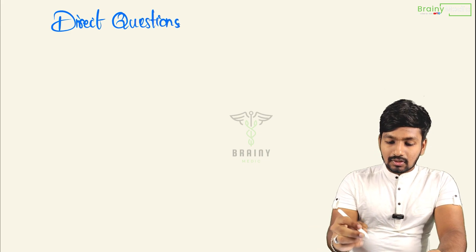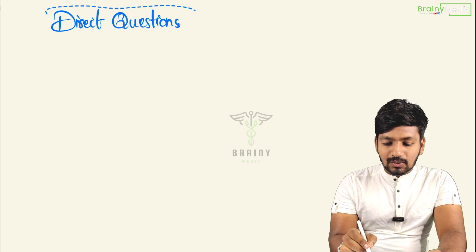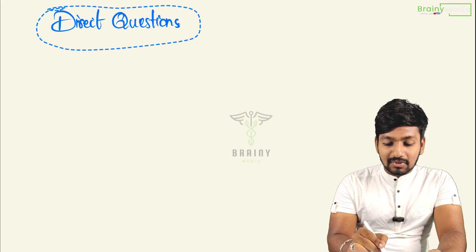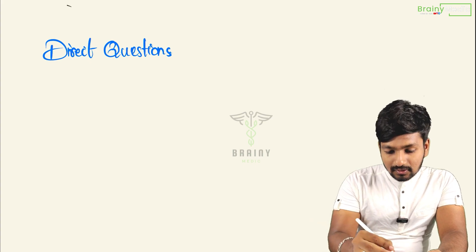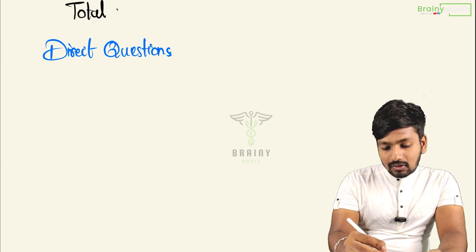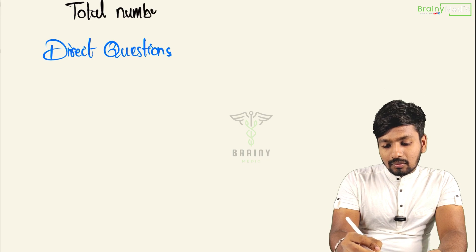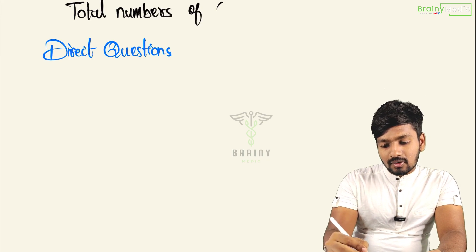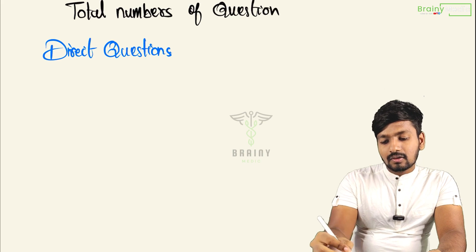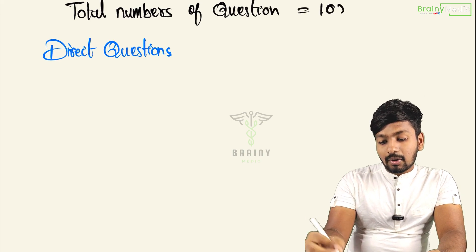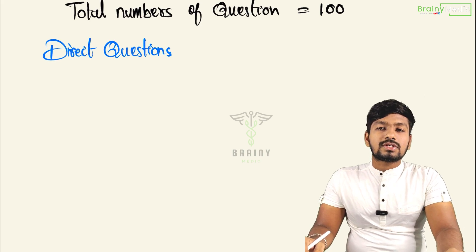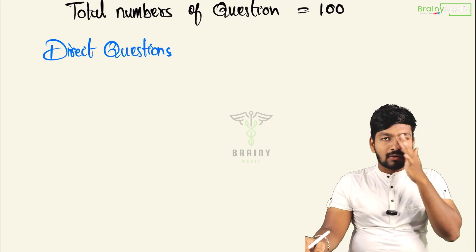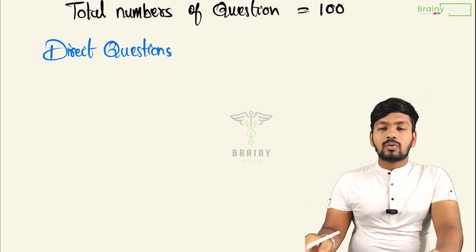First, total number of questions — I'm telling you. In biology, there are 100 questions: Botany 50, Zoology 50. We'll see the right questions, so here are the 100 questions.